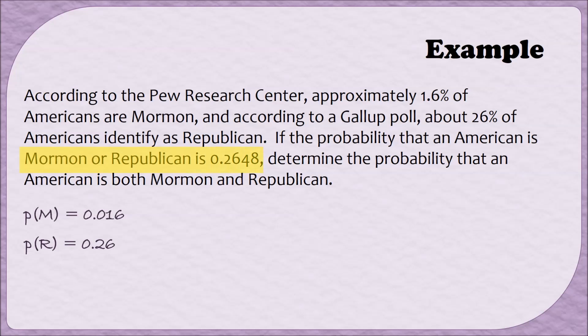Lastly, we were told that the probability that an American is Mormon or Republican is 0.2648. In this case, notice that the connecting word they've used is an OR, so we've been told a compound probability. The probability of M or R is 0.2648. Lastly, we can write the question in symbols as well. We've been asked to determine the probability that an American is both Mormon and Republican. This is another compound probability using the word AND, so we need to find the probability of M and R. How did you do with your summary?